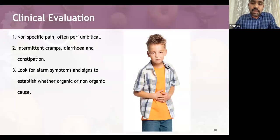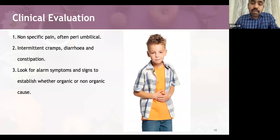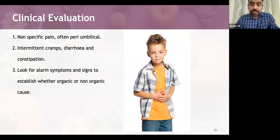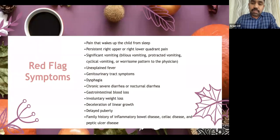About 1 in 10 children experience recurrent abdominal pain, which can be organic or non-organic. Functional abdominal pain is the leading cause. When encountering a case at a PHC, these functional abdominal pains are usually non-specific and peri-umbilical. We have to identify certain alarming symptoms and signs as clues toward an organic etiology. The presence of an alarming symptom does not necessarily confirm organic etiology, and a lack of alarming symptoms does not rule out organic disease.